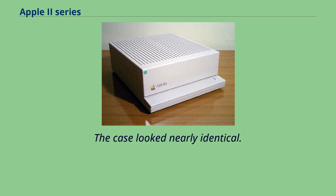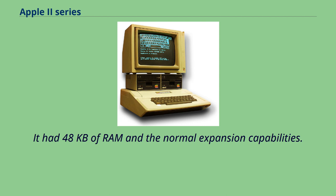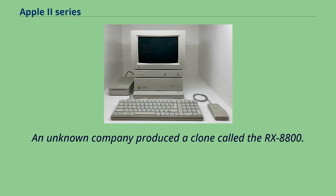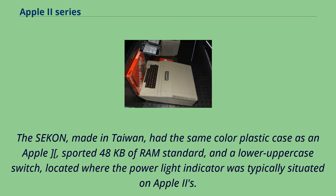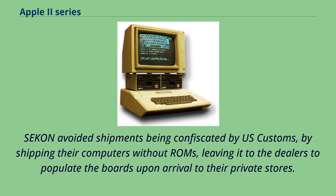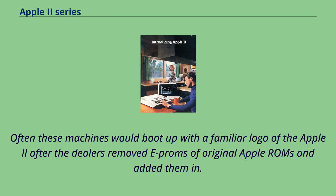An unknown company produced a clone called the RX 8800, with one new feature being a numeric keypad. Made in Taiwan, it had the same color plastic case, 48 kilobytes of RAM, a lower/uppercase switch, and a 5-amp power supply for add-on cards. The manufacturer avoided US customs confiscation by shipping computers without ROMs, leaving dealers to populate the boards upon arrival. Users could thus obtain a fully Apple-compatible clone for around $600 US, as opposed to $2,500 from Apple.